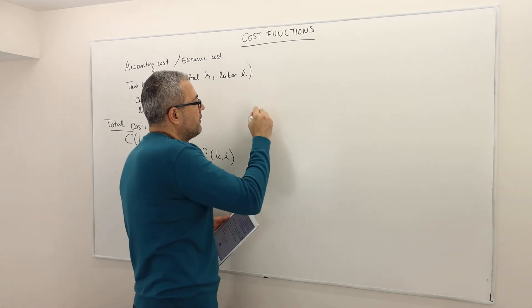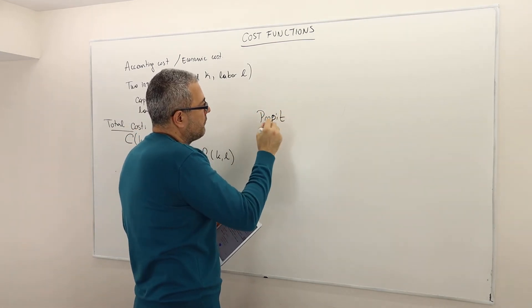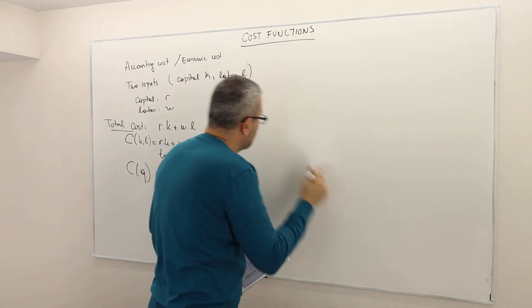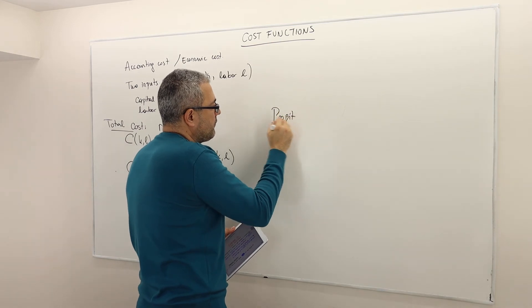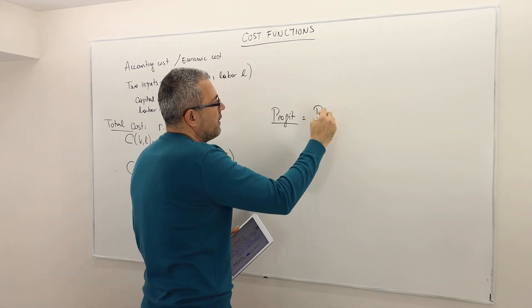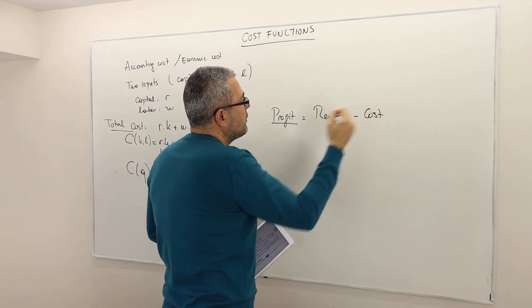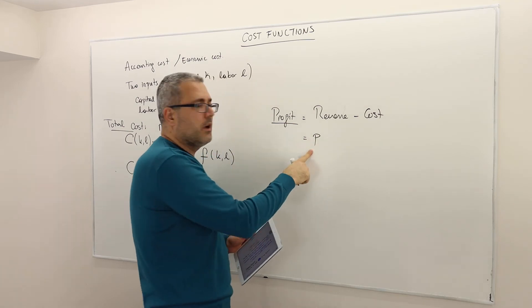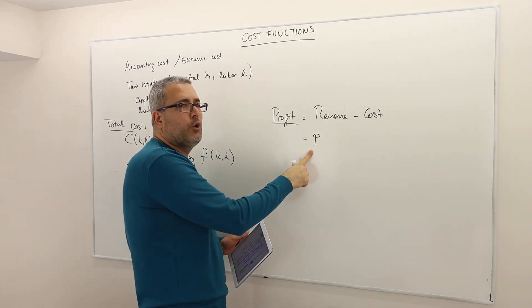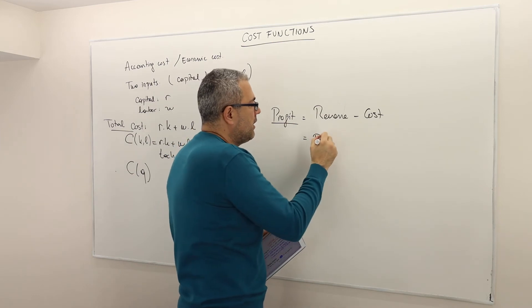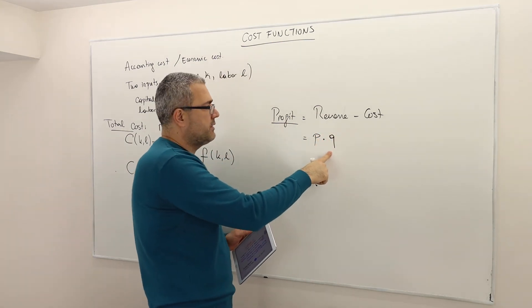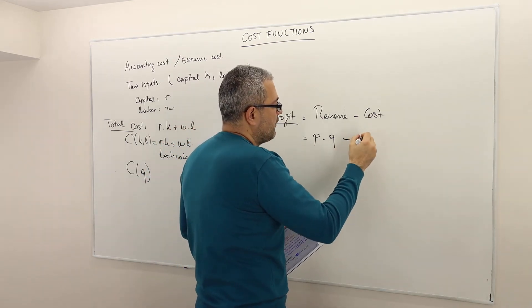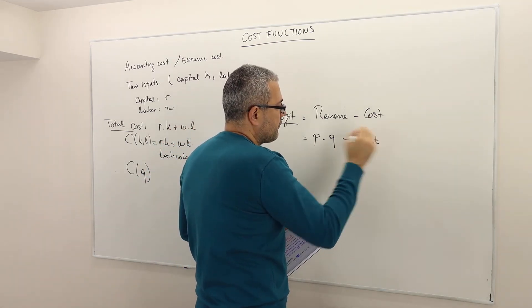But what is profit? Profit is simple. It's revenue minus costs always. So it's basically, once again, revenue minus cost. So what is revenue? Revenue is simple. It's price per unit of output you sell times the quantity that you sell minus the cost of producing this quantity.